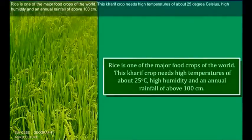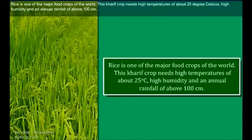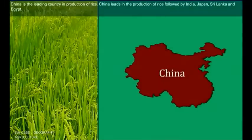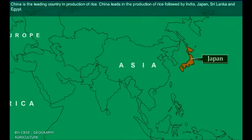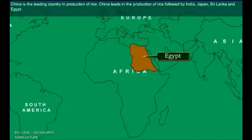Rice is one of the major food crops of the world. This Kharif crop needs high temperatures of about 25 degrees Celsius, high humidity, and an annual rainfall of about 100 cm. China is the leading country in production of rice, followed by India, Japan, Sri Lanka and Egypt.